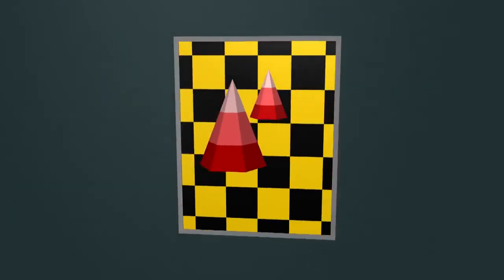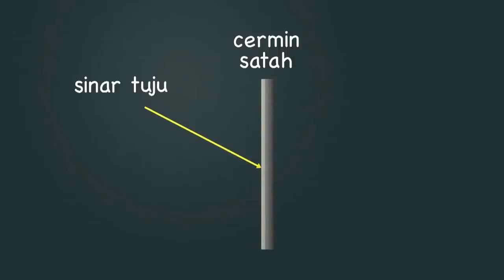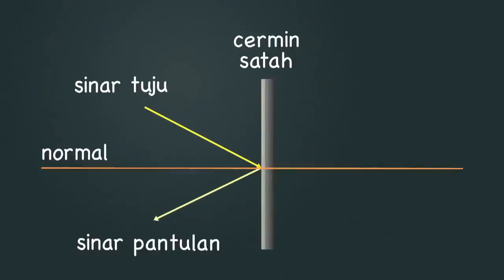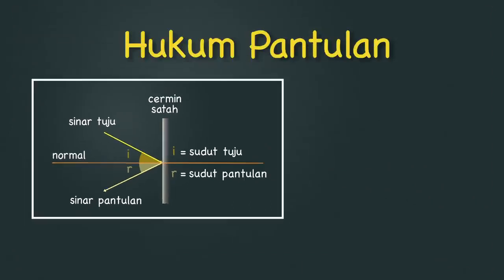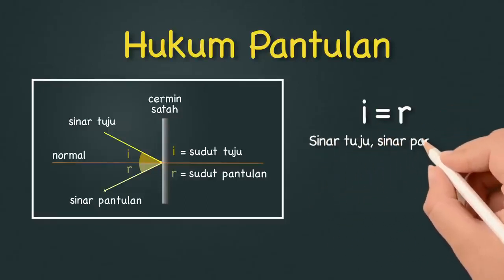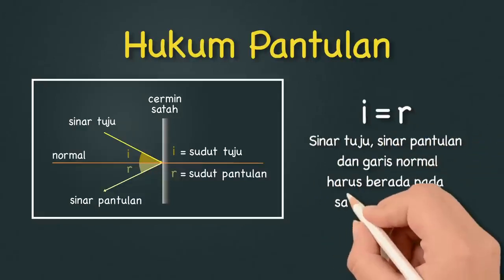Untuk mengkaji hukum pantulan, kita akan jadikan cermin satah sebagai contoh. Ketika berlaku pantulan cahaya pada cermin satah, ada tiga garisan penting yang anda perlu fahami: garisan sinar tujuh, garis normal, dan garis sinar pantulan. Antara sinar tujuh dan garis normal, kita ada sudut yang dipanggil sudut tujuhai. Antara sinar pantulan dan garis normal pula, kita ada sudut pantulan R. Hukum pantulan menyatakan sudut tujuhai sama dengan sudut pantulan R. Manakala sinar tujuh, sinar pantulan dan garis normal harus berada pada satah yang sama.